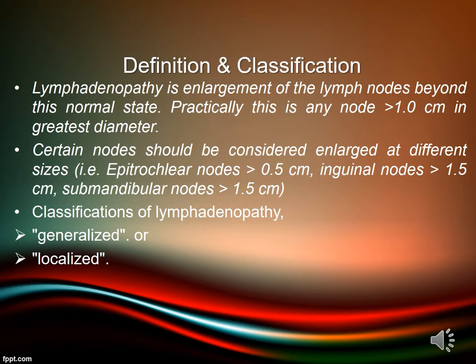Lymphadenopathy is enlargement of lymph nodes beyond their normal state. Practically, this is any node more than one centimeter in greatest diameter. Lymphadenopathy refers to nodes that are abnormal in either size, consistency, or number. Certain nodes should be considered at different sizes: epitrochlear nodes more than 0.5 cm, inguinal nodes more than 1.5 cm, submandibular nodes more than 1.5 cm.